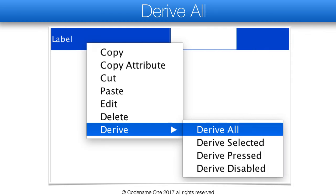One important thing to mention is that I use derive all on pretty much every style in the theme. This works by right-clicking a style and selecting derive all. Once you do that, it creates styles for selected, pressed, and disabled that derive from this style. That's a very useful starting point, important even for labels, as they can be used in lead components and we'd like them to have a common base setting.